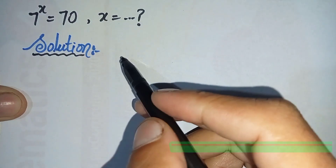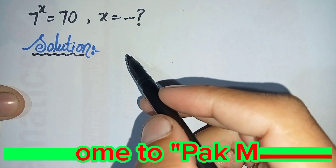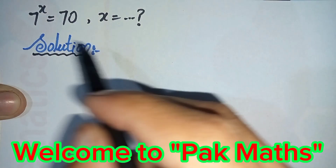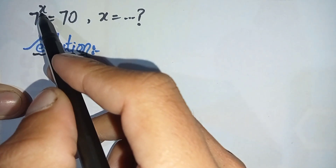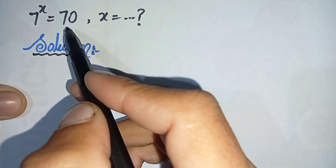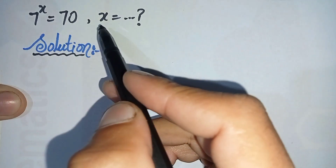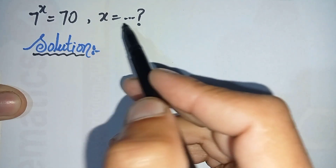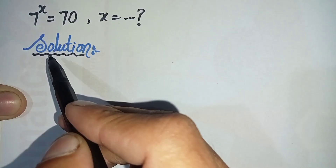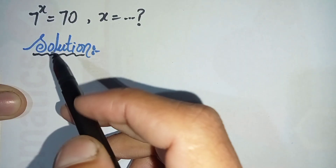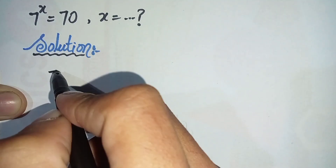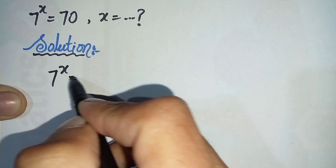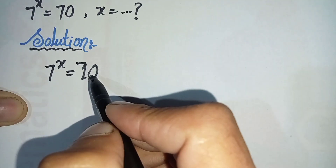Hello everyone, welcome to Parkmas. In this video I'm going to solve this exponential math problem: 7 raised to the power x is equal to 70. So here we will find the value of x. First of all we will write the solution, and then we will rewrite this question in the solution again.